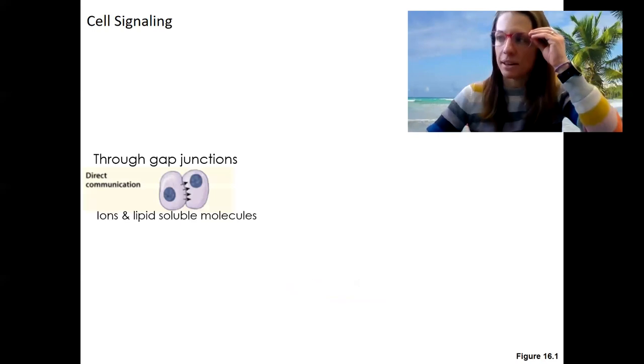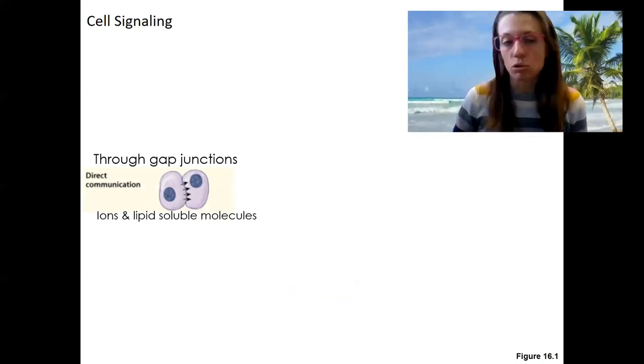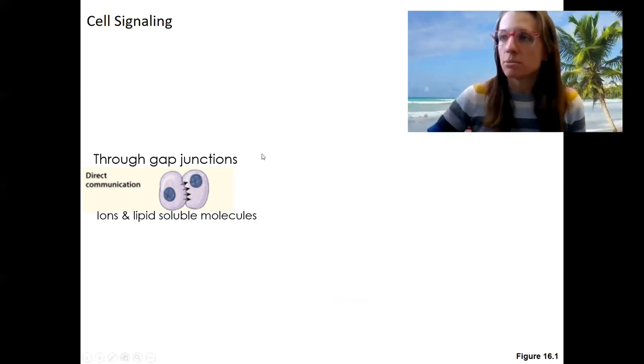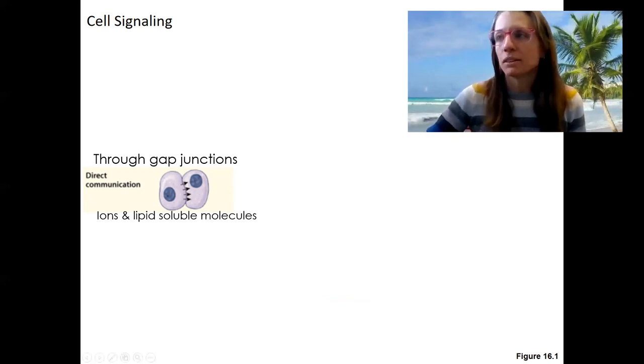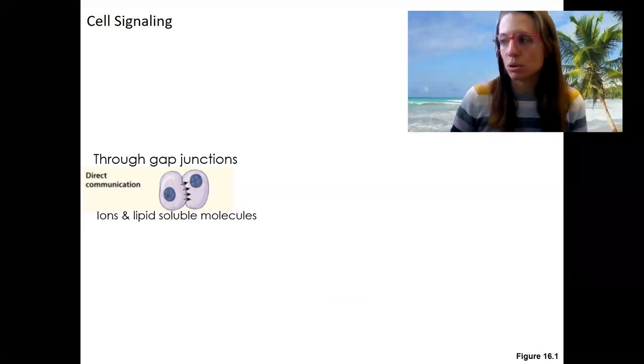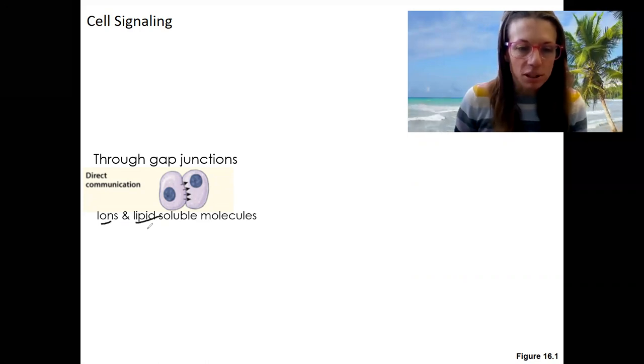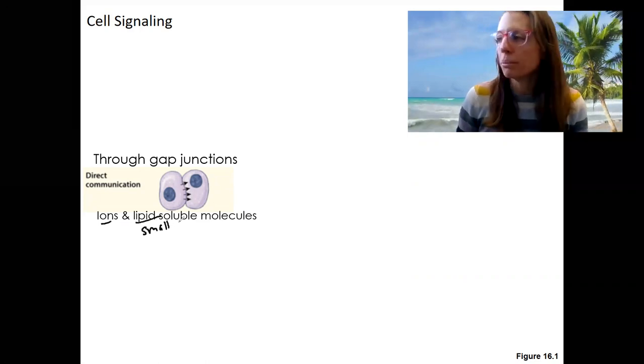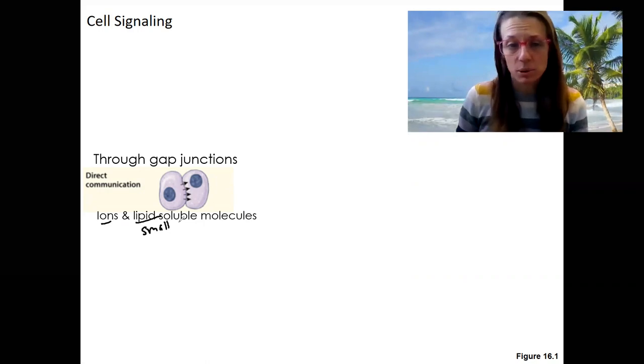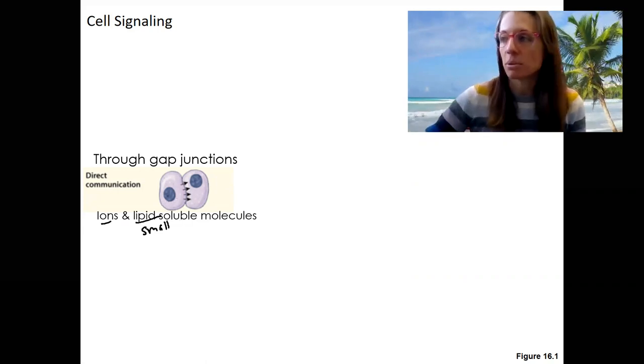So here are some other ways that cells can signal other cells. There's direct communication through gap junctions. This is the most direct, like simple way of communicating you can get, directly from one cell to another. What type of molecule goes through here? I have it right here. Ions and lipid soluble. So these are going to be small. They go right through channel proteins. So it can't be a protein, right? Protein can't fit through a protein.